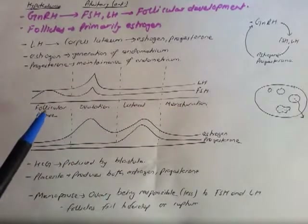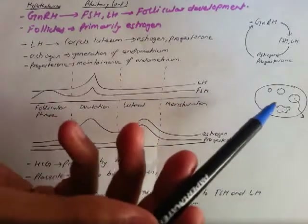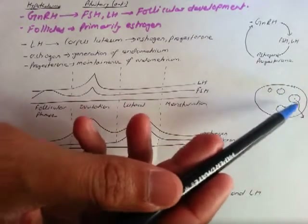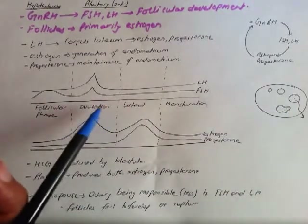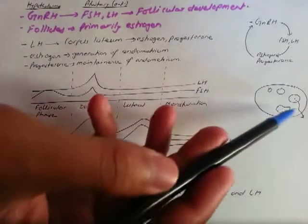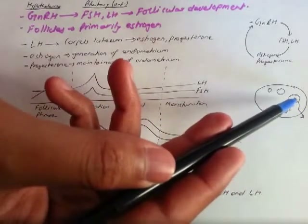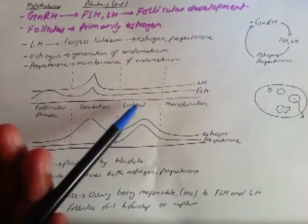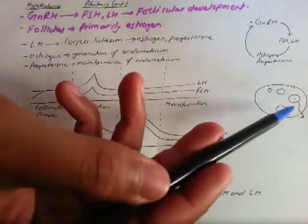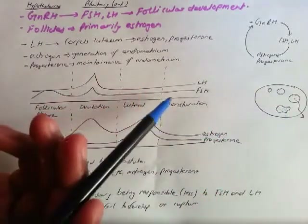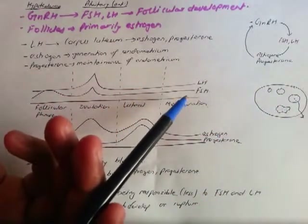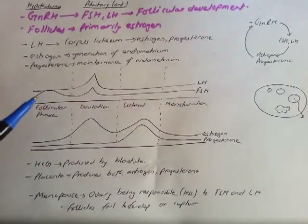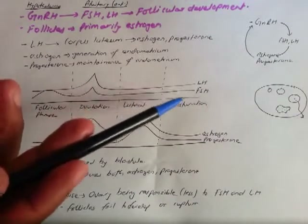In the follicular phase, the follicles are developing. Ovulation is when the follicle literally breaks and the egg is released. The luteal phase is when the corpus luteum is active. And menstruation is when the endometrium finally breaks down and falls apart. These graphs show the changes in LH, FSH, estrogen, and progesterone across these four phases.